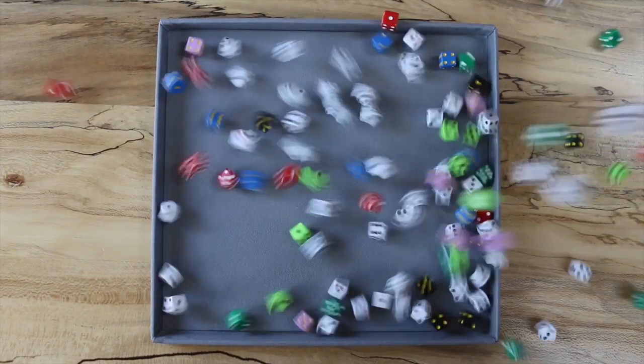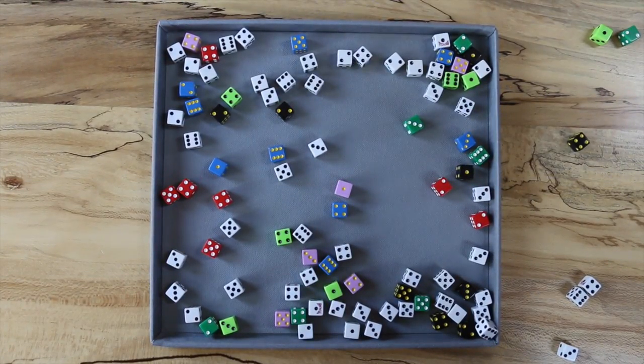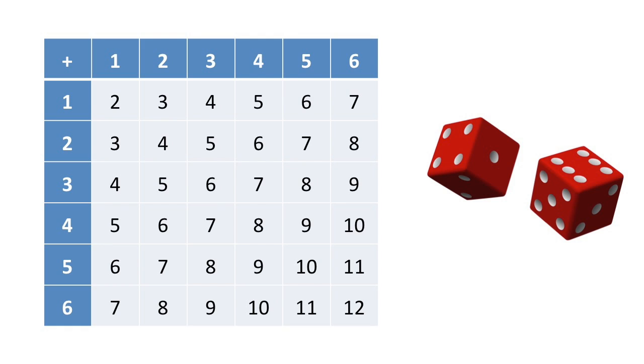If you roll a pair of regular dice, what are the possible outcomes? This table shows the sum for each possible roll.